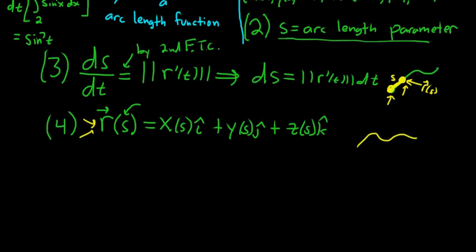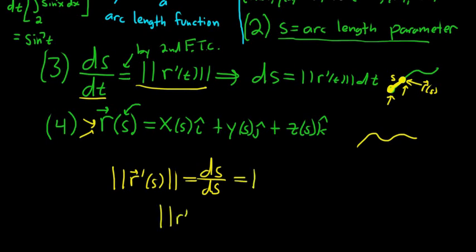Note something else. If you take the derivative of r, r'(s), and take the magnitude, using the formula above, we just get ds/ds. That cancels, so we get 1. This magnitude of this derivative is always 1. So, r' is always a unit vector.